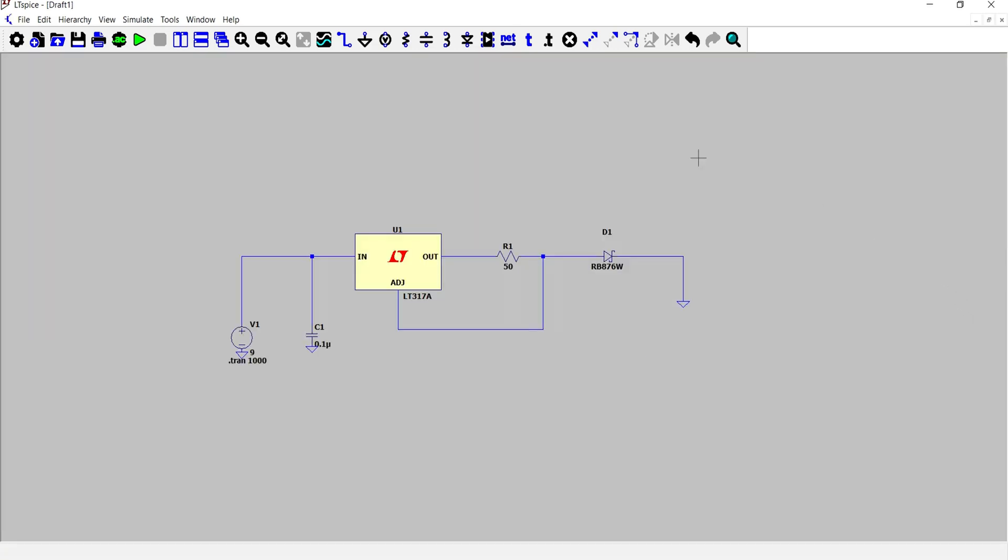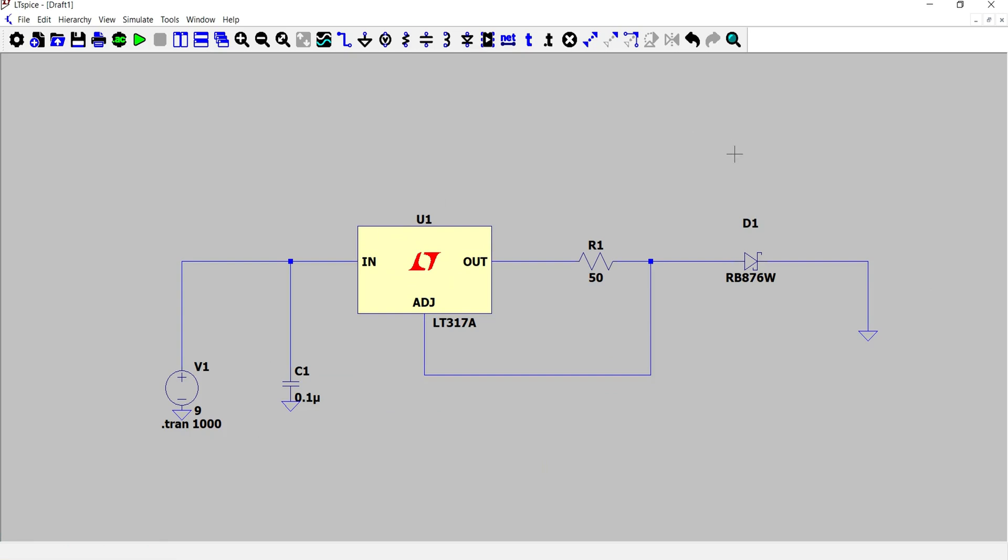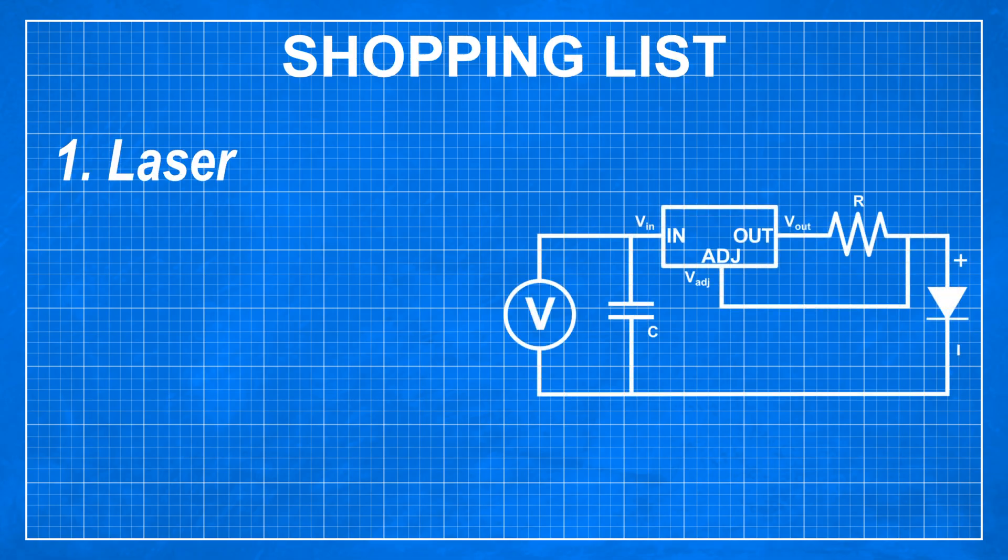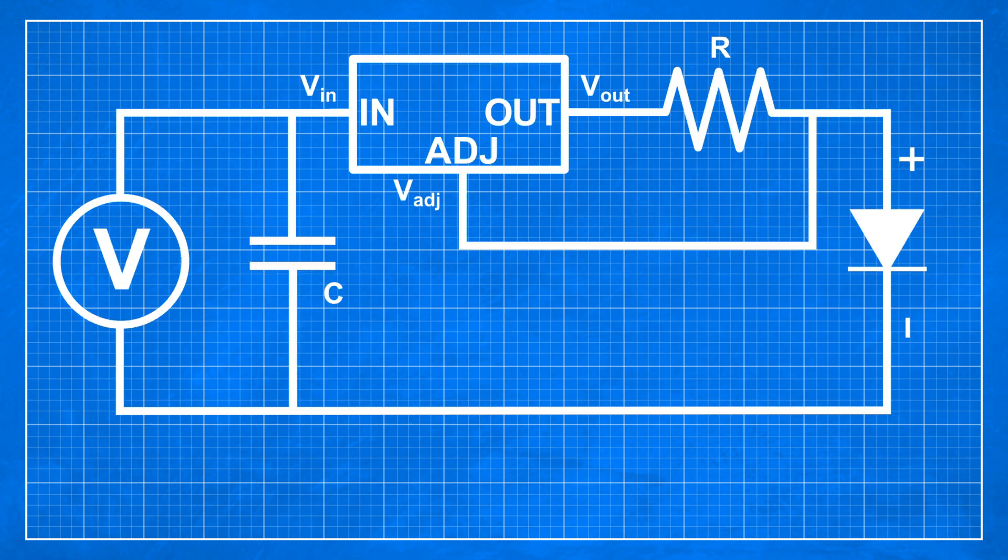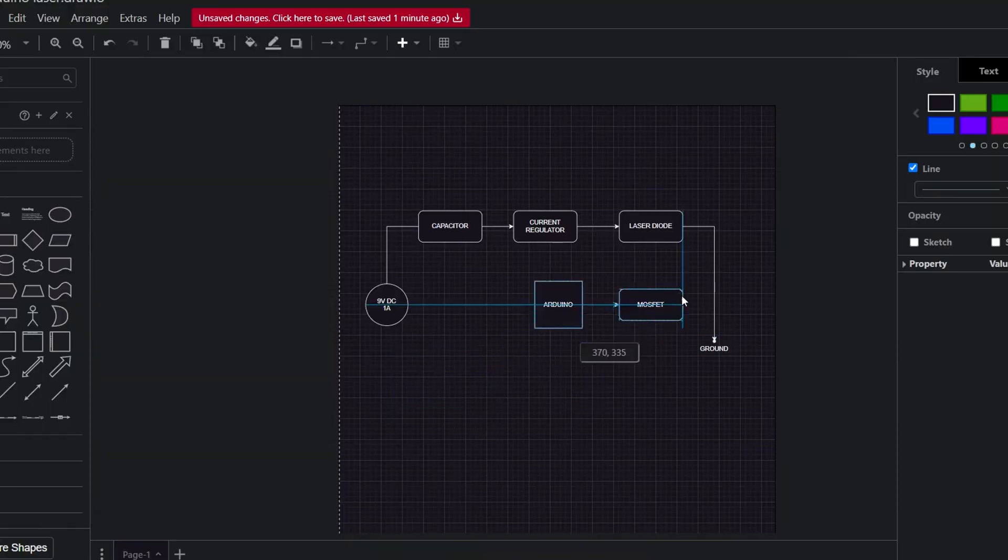With everything working as it should I could order all components. I will need laser diode, LM317, 1 microfarad capacitor and 150 ohm resistor, or we could connect a few in series or parallel. In the next video I'm going to build this circuit and I will try to add Arduino controlled MOSFET switch.